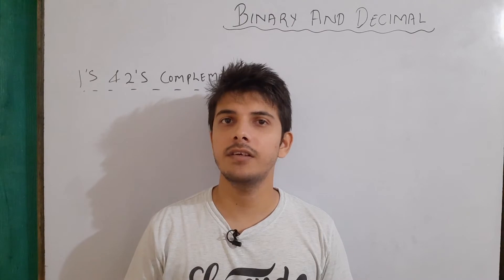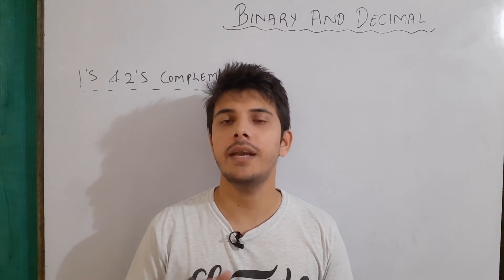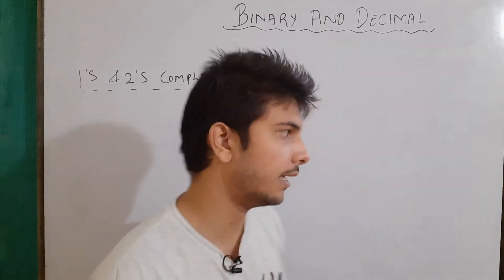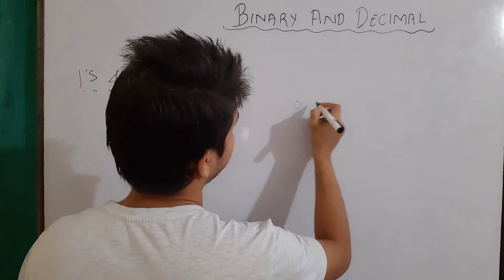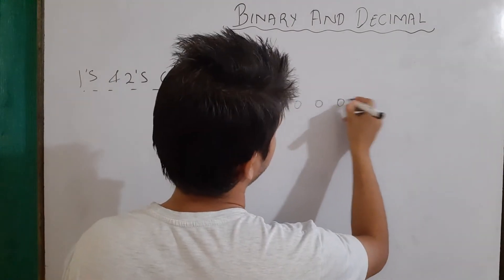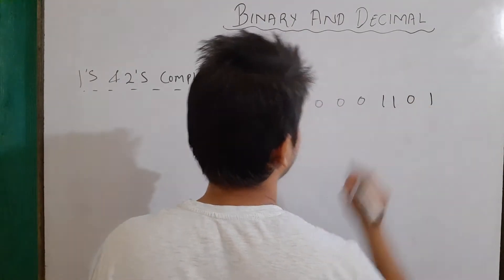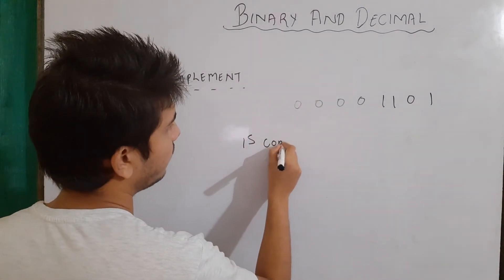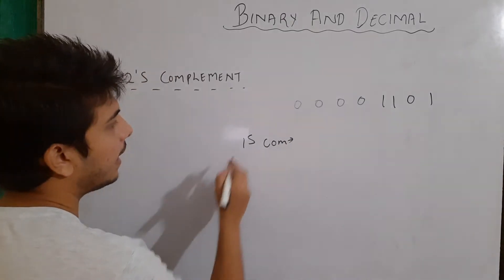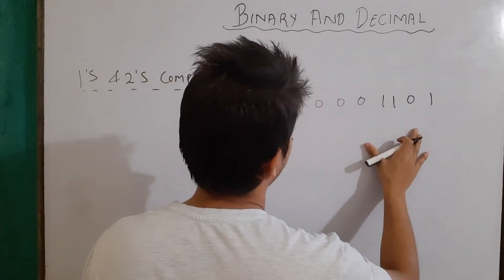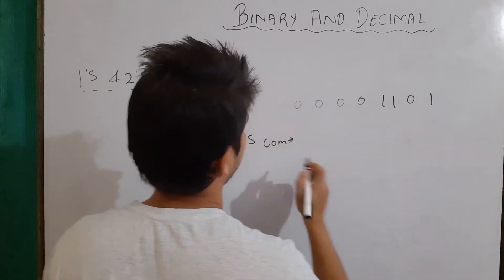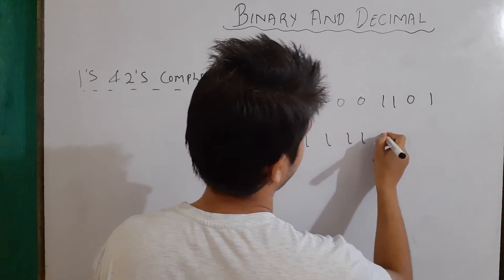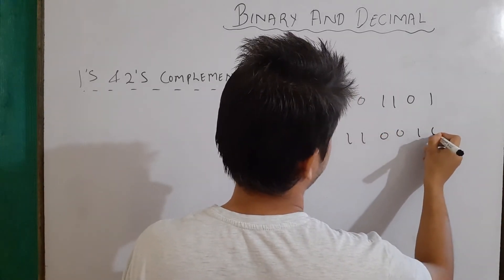Before going to decimal to binary conversion for negative numbers, we should know about one's and two's complement. Let's say our binary digits are 0 0 0 0 1 1 0 1 and we want to find its one's complement. For one's complement we simply flip all the bits — 0 becomes 1 and 1 becomes 0. So the one's complement will have all bits flipped.